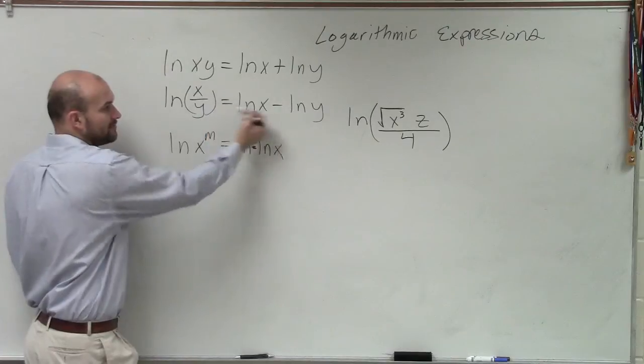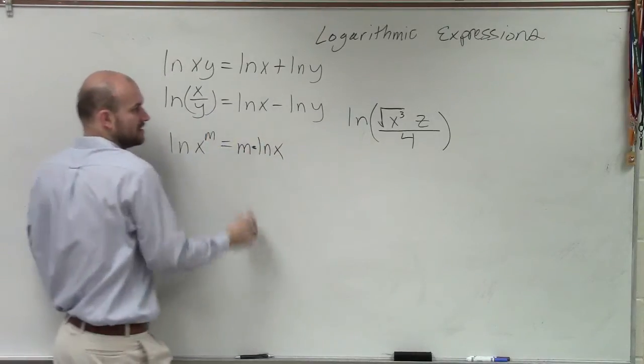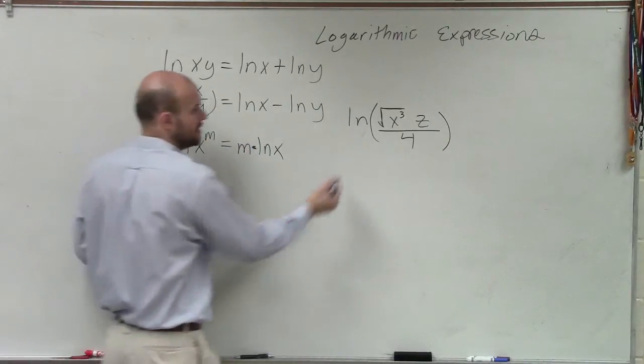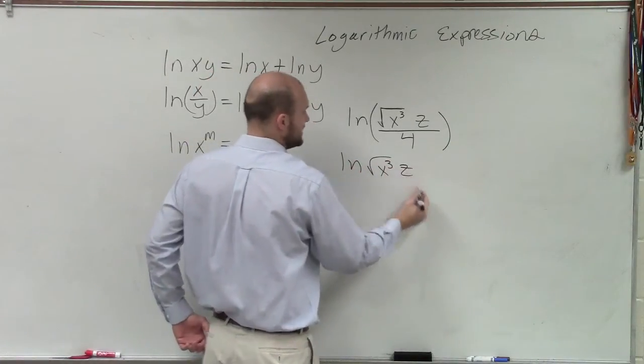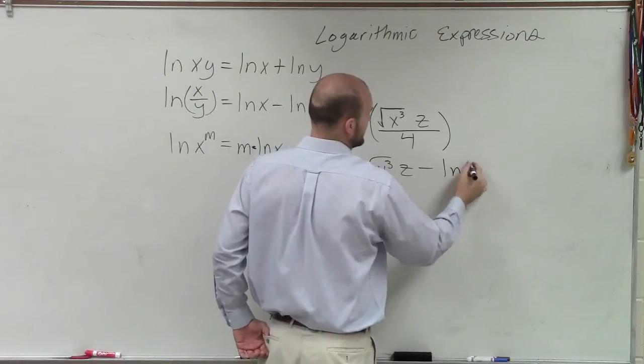So I'm going to break it up now into two different logarithms: ln of the square root of x cubed times z minus ln of 4.